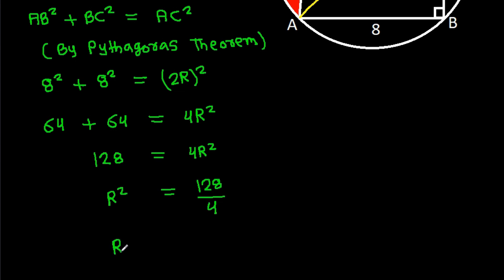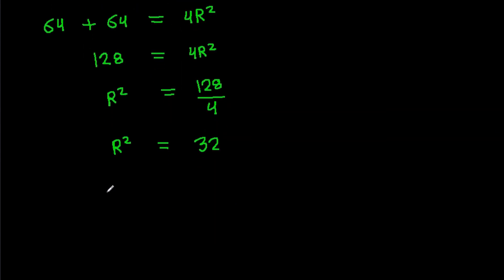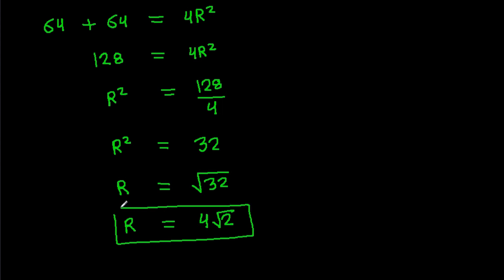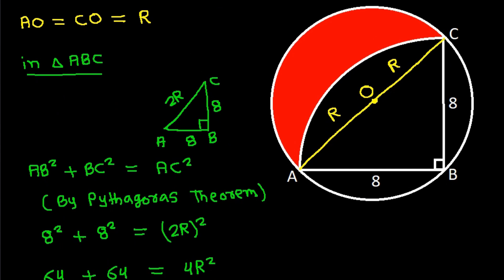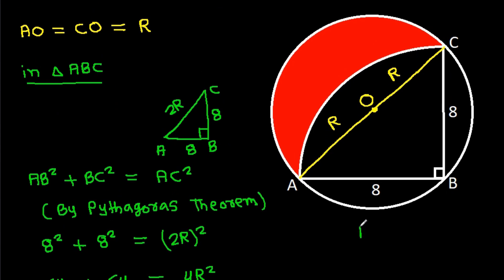So AC squared is 32. Therefore R squared equals 32, and R equals the square root of 32, which gives us R equal to 4 times the square root of 2.